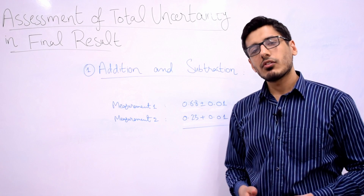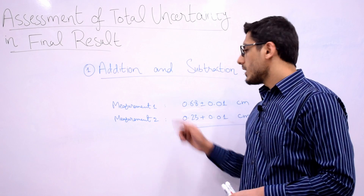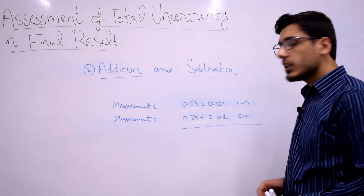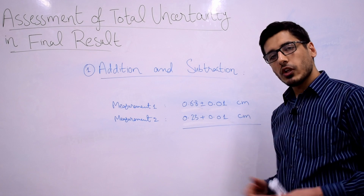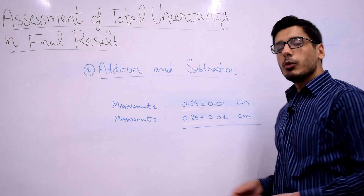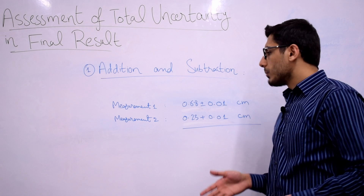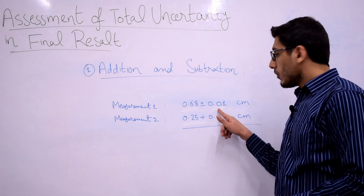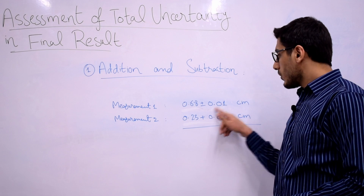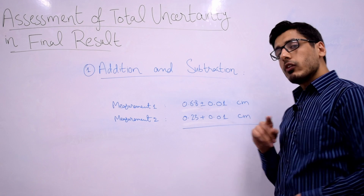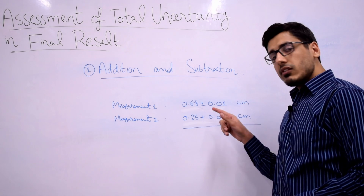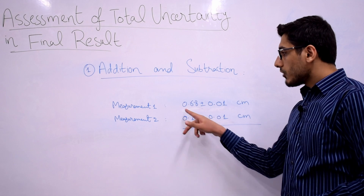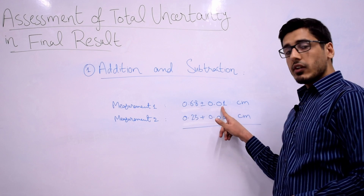Let's understand this with an example. I have two measurements: one is 0.68 ± 0.01 cm and the other is 0.23 ± 0.01 cm. Both measurements are taken using a vernier caliper. From my previous video, you know that 0.01 cm is the least count of the vernier caliper, and the least count is equal to the absolute uncertainty.